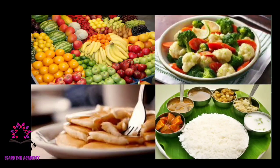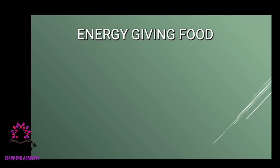There are different types of food — sweet, sour, salty, etc. — found in fruits, vegetables, rice, and a variety of snacks. We classify food items into three categories. The first category is energy giving food.